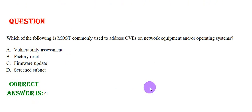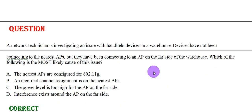Which of the following is most commonly used to address CVEs on network equipment and/or operating systems? Option A: Vulnerability Assessment. Option B: Factory Reset. Option C: Firmware Update. Option D: Screened Subnet. The correct answer is Option C.